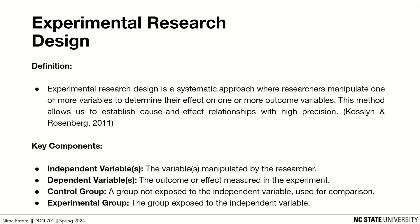So, what is experimental research design? One definition is that experimental research design is a systematic approach where researchers manipulate one or more variables to determine their effect on one or more outcome variables. This method allows us to establish cause and effect relationships with high precision. Cause and effect is the key takeaway — experimental research enables us to discover how different factors or variables affect outcomes to establish a causal relationship.